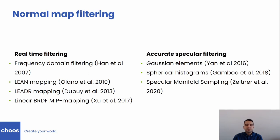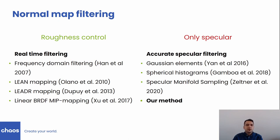At the other end of the spectrum are the specular normal map filtering approaches that target accurate high-quality spatiotemporal rendering of glints. A key feature of real-time approaches is that they usually offer roughness control, while accurate offline techniques are designed to filter only specular normal maps. Our method is an offline technique for rendering high-quality glints that tries to bridge the gap between the two categories by introducing roughness control. Apart from that, our method shares other desirable properties of real-time approaches.